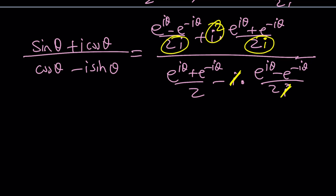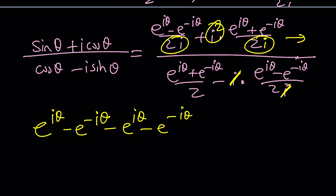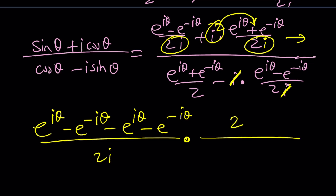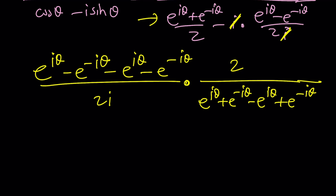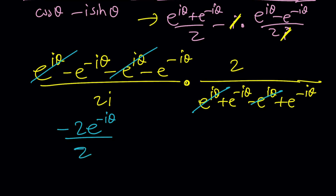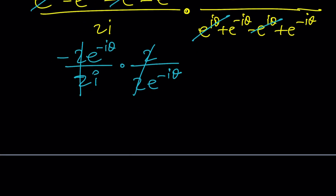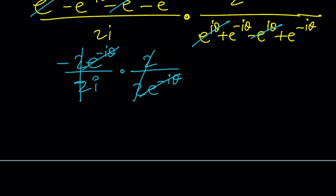Separating into two fractions, the numerator becomes e to the i theta minus e to the negative i theta, minus e to the i theta minus e to the negative i theta — note the minus sign acts on the plus sign — all divided by two i, with a factor of two from flipping. The denominator comes from the other part: e to the i theta plus e to the negative i theta minus e to the i theta plus e to the negative i theta. Terms cancel: in the numerator those two cancel, and in the denominator those two cancel, leaving negative two e to the negative i theta divided by two i times two over two e to the negative i theta. The twos cancel and the exponentials cancel, leaving negative one over i.